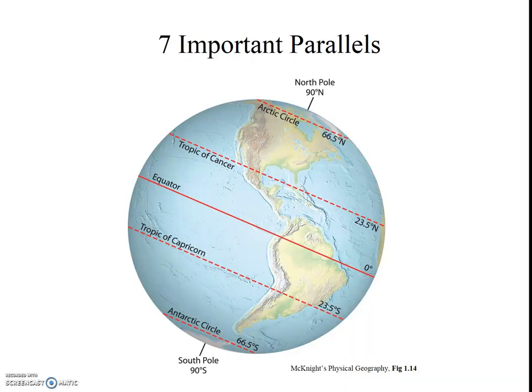The seven parallels shown here are very important in our study of geography. We will use them extensively next week when we discuss the seasons. You should memorize their names and their values in degrees north or degrees south. The equator is at 0 degrees, and no north or south label is needed. But for all of the others, you need to designate north or south. Also remember that at the poles, the parallels are points, not lines.